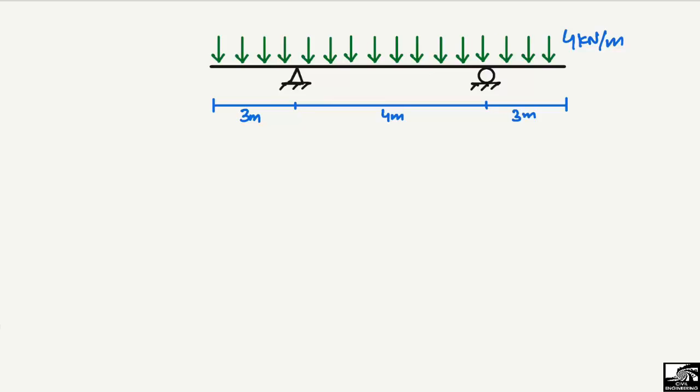If we look at the beam, there is a 4 kilonewton per meter uniformly distributed load acting on the beam. The beam is divided into three different spans with a hinge support and a roller support. The lengths are 3 meter, 4 meter, and 3 meter.